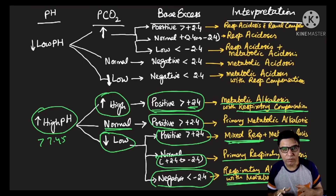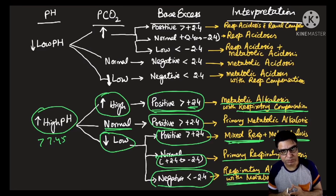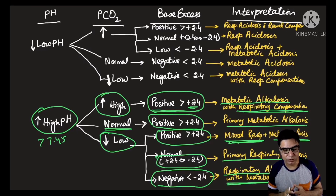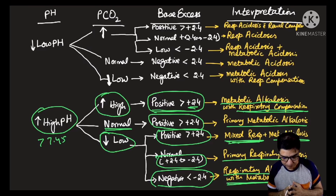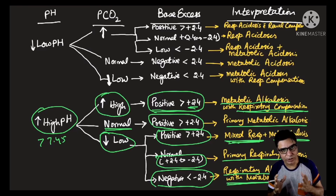I hope you've understood how to use base excess along with pH and pCO2 levels to make a diagnosis of acid-base disturbance. If you like my videos, please give a thumbs up and share with your friends. Subscribe if you haven't, and if you still have any questions put them in the comment section below and I'll try my best to answer. Have a very good day. Bye-bye.